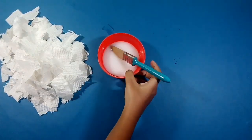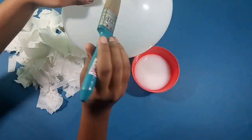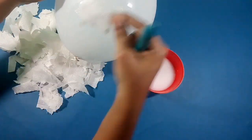Now take some tissue paper and tear it into small pieces. Use the glue mixture to cover the balloon with tissue paper.